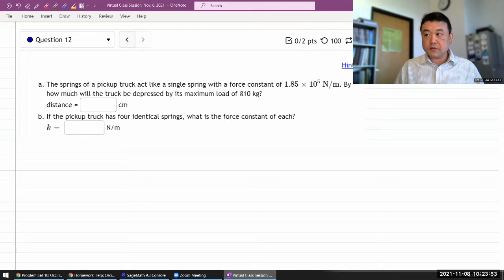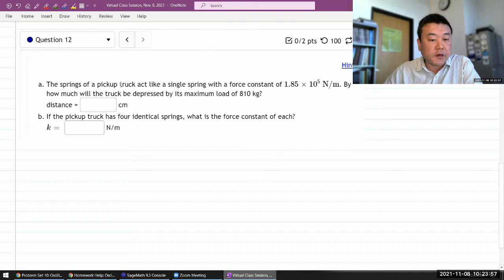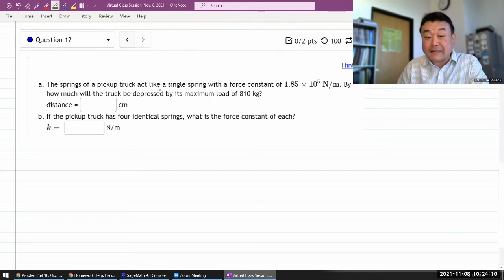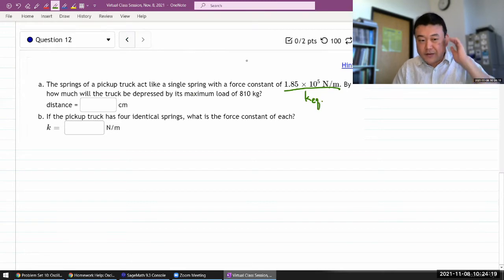Okay, so this is what the question says. It says the springs of a pickup truck act like a single spring with a force constant. Because I see the way the question is worded, like 'act like,' it's not an actual single spring. Let me label this as an equivalent spring constant, meaning there isn't an actual spring with this constant, but somehow for the system, it works out to be that.